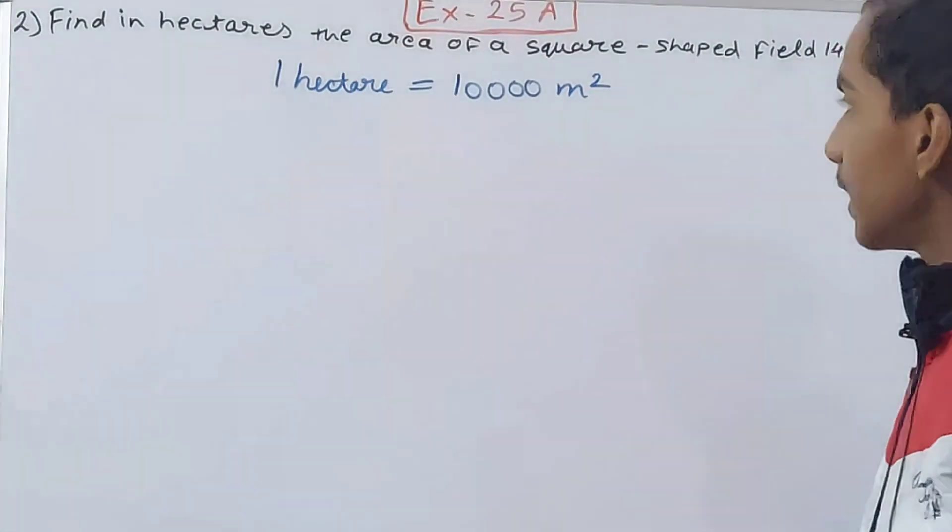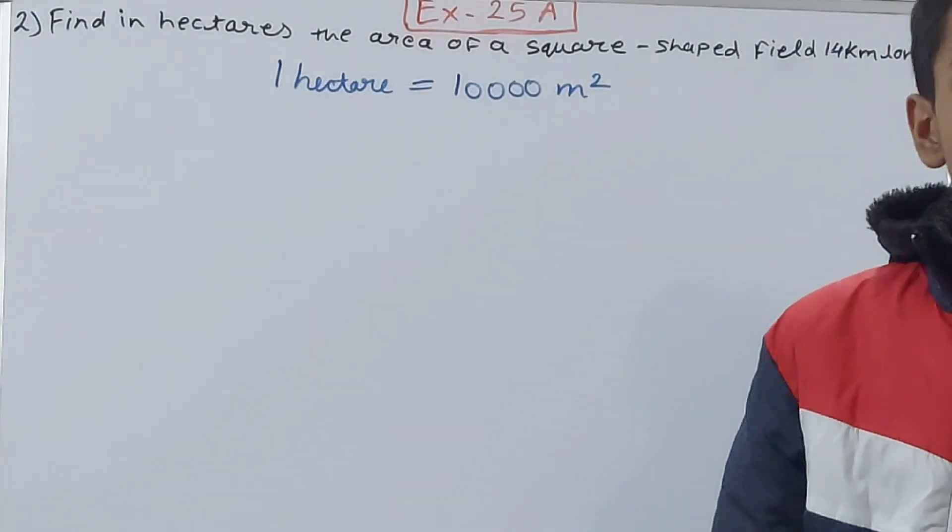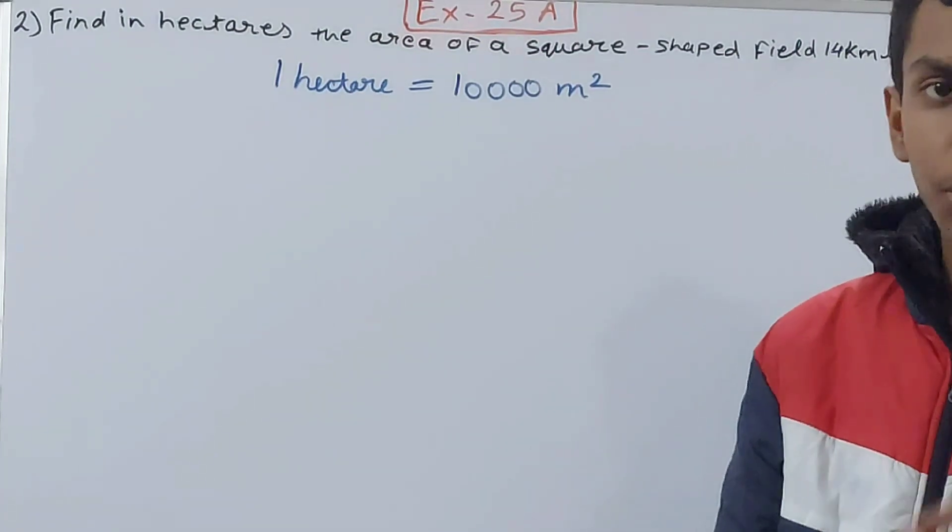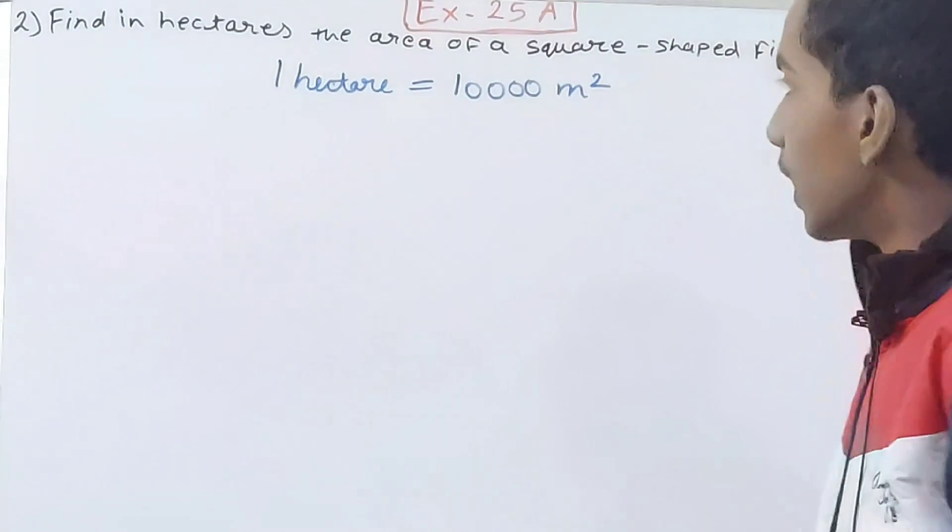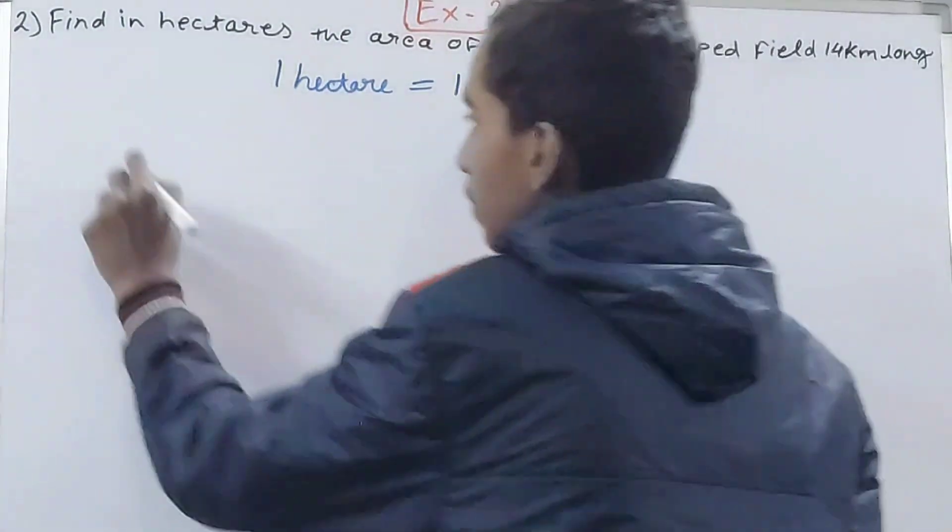So 10,000 square meters will make up one hectare. Hectare is the unit for measuring the area, so we don't use hectare square, just hectare. Then how much will be the area of a square shaped field which is 14 kilometers long?